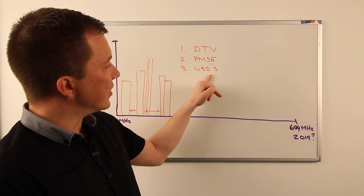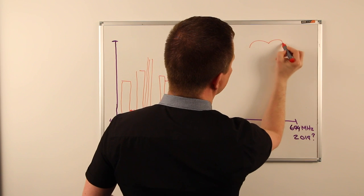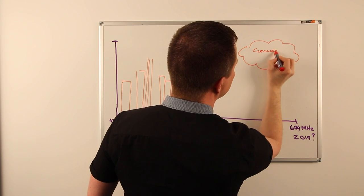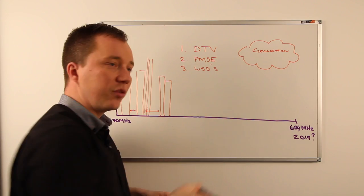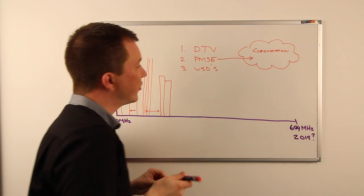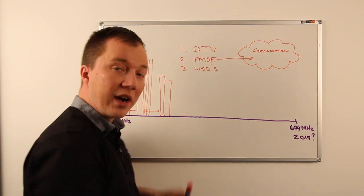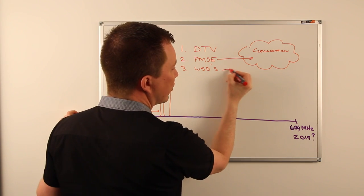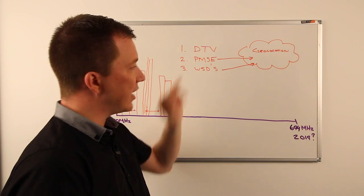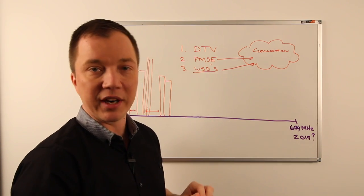So how do we ensure that white space devices don't cause interference to PMSE? The practice is there's going to be a geolocation database. This database, which will be hosted by a handful of companies, will host the licensing data of PMSE. If a white space device needs to transmit or receive data in the same spectrum where radio microphones might be operating, they need to refer to this geolocation database. If the licensing data proves that radio microphones or in-ears are in use in that given spectrum, white space devices will not be permitted to operate there.